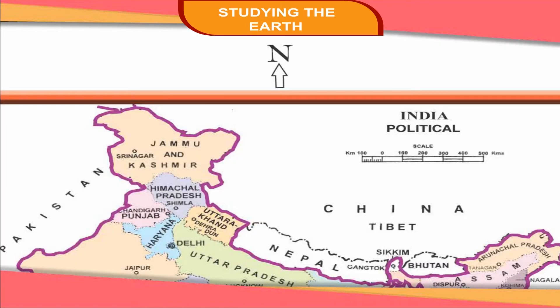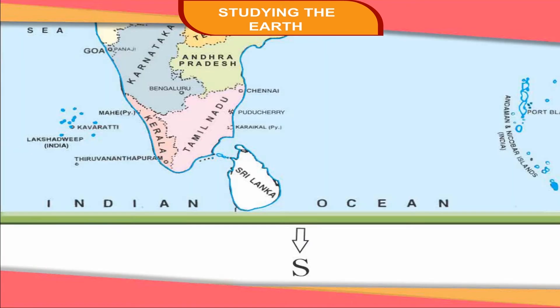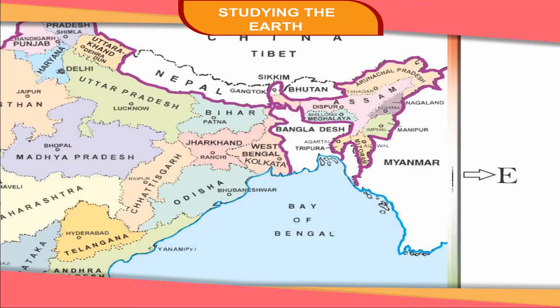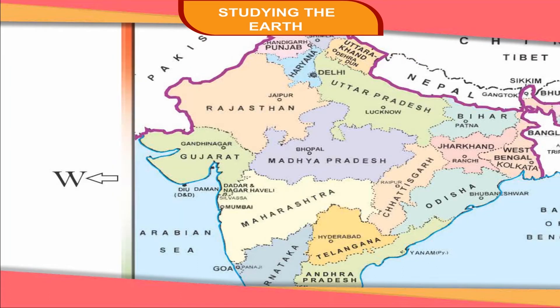The top of the map corresponds to North. The bottom of the map corresponds to South. The right edge corresponds to East, and the left edge corresponds to West.